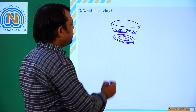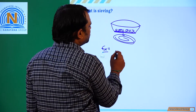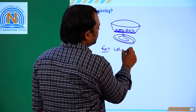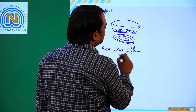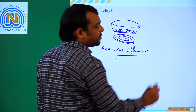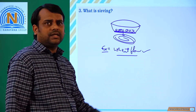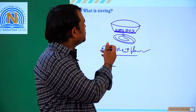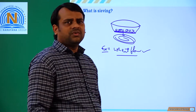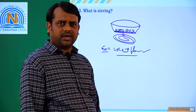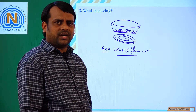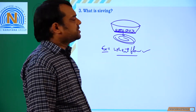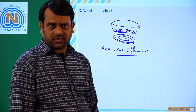For example, generally in our home we use this for wheat flour. In wheat flour, larger particles or pieces of wheat may be present. By using this sieve, we can separate those heavier particles and collect clean wheat flour using this sieving method.